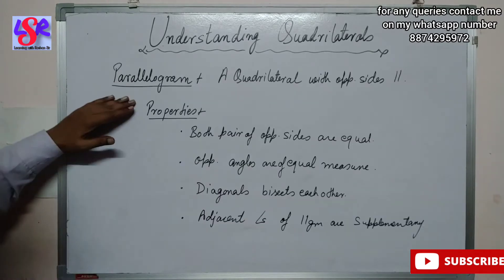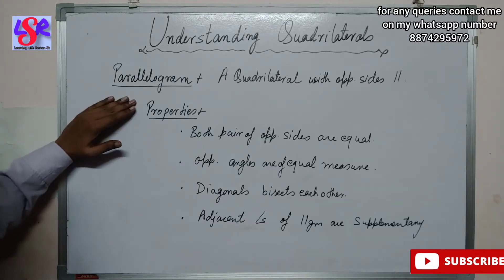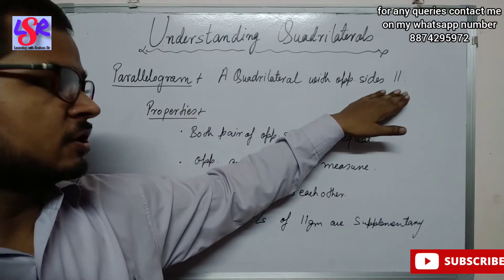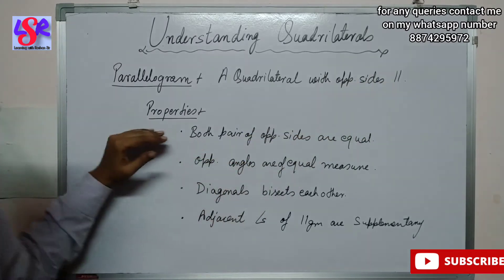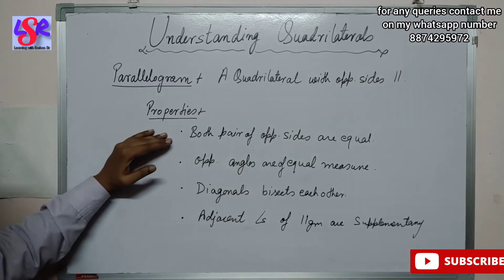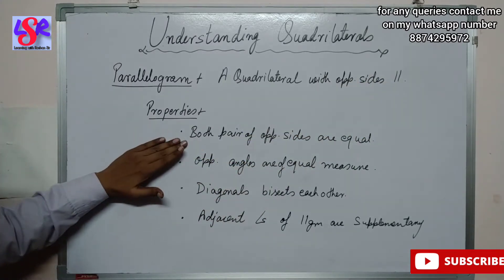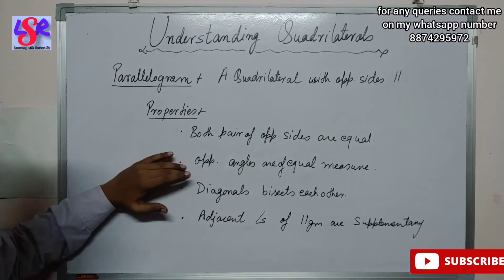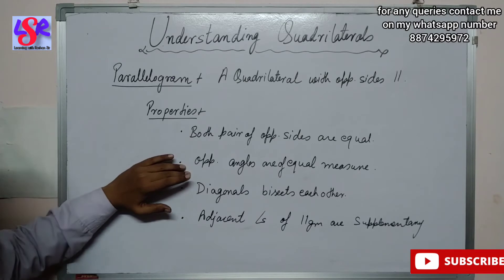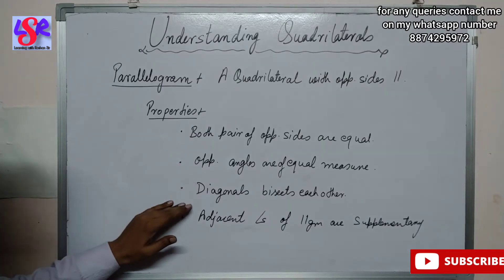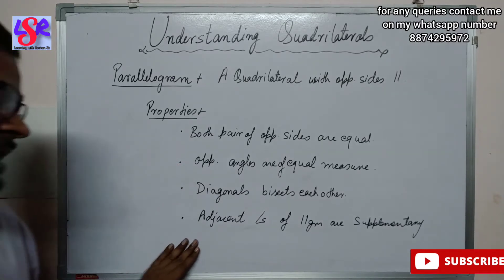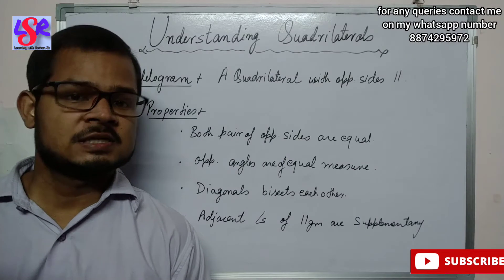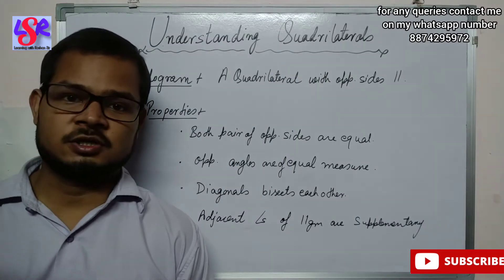Here we have a parallelogram — a quadrilateral with opposite sides parallel to each other. The properties of a parallelogram are: both pairs of opposite sides are equal, opposite angles are of equal measure, diagonals bisect each other, and adjacent angles of the parallelogram are supplementary to each other.